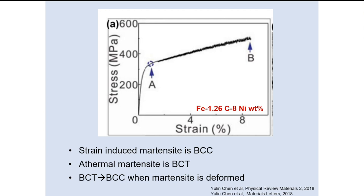There are many such interesting results in literature that one can explore. Two particularly interesting results are highlighted here. First, strain-induced martensite: when austenite is deformed via TRIP, martensite forms, and irrespective of the carbon concentration, strain-induced martensite is body-centered cubic. Moreover, even if martensite is initially body-centered tetragonal in high-carbon steels, upon deformation the crystal structure changes from body-centered tetragonal to body-centered cubic. This finding needs further exploration.